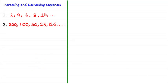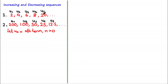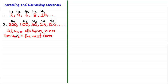Assuming we express the nth term as u subscript n, where n is a positive integer or a natural number, then we can index our terms. So the first term would be 2, the second term would be 4, the third term u sub 3 would be 6, and so on. We can also find an expression for the next term, which would be u sub n plus 1. For example, substituting n equals 3 gives the third term 6, and the next term u sub 4 is 8, as expected.